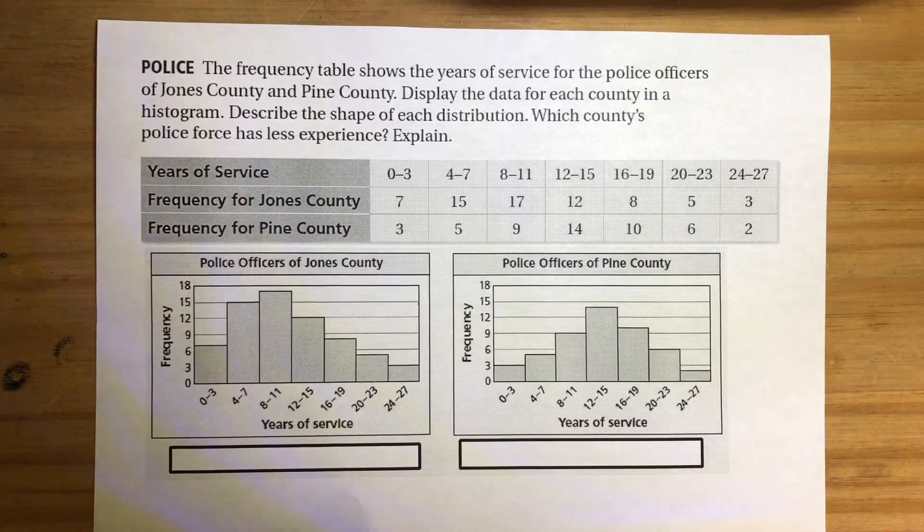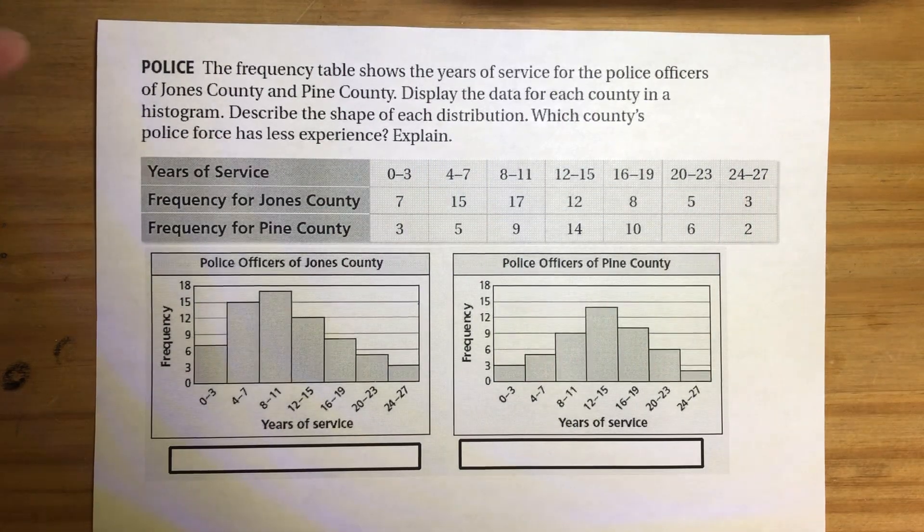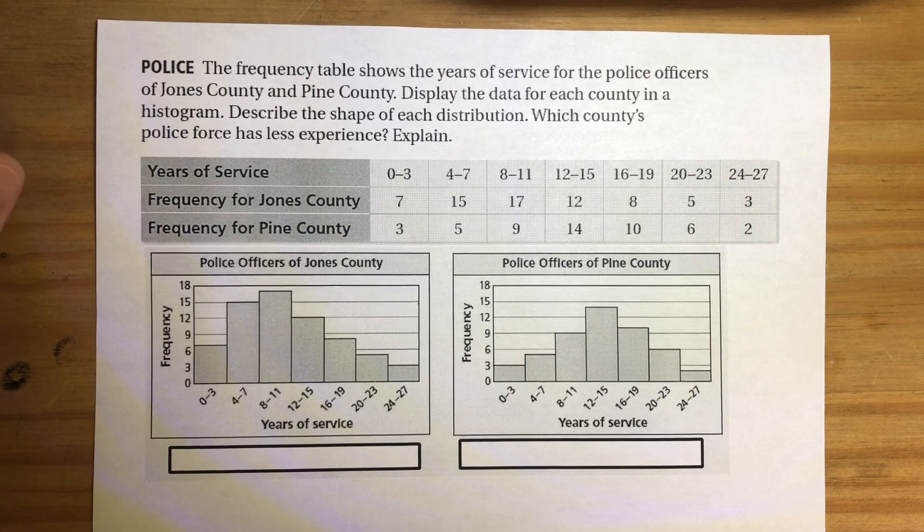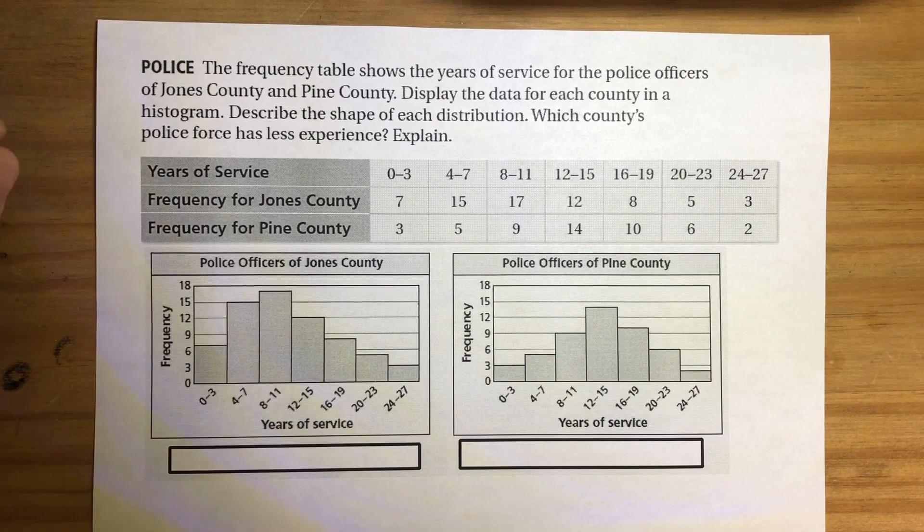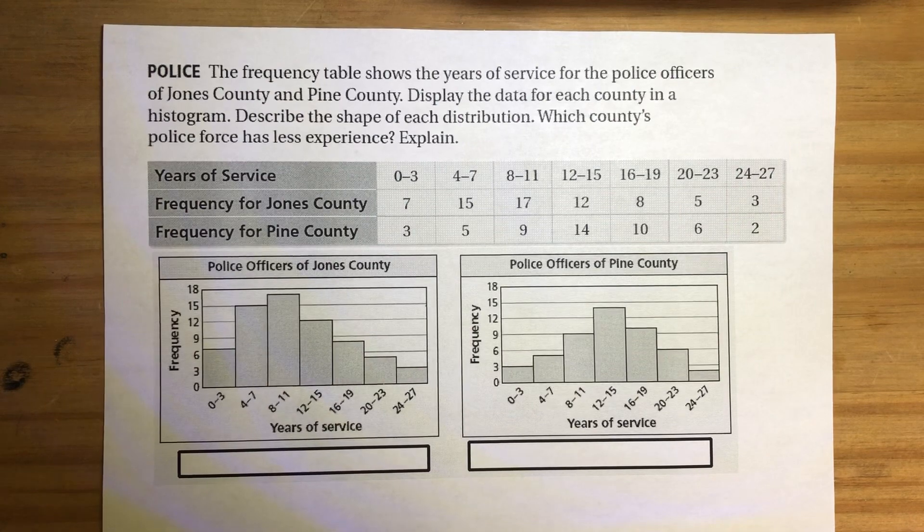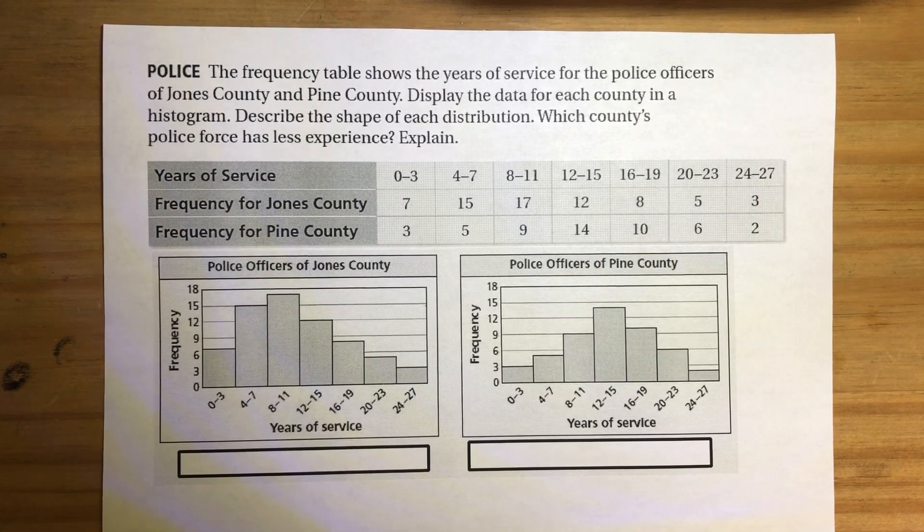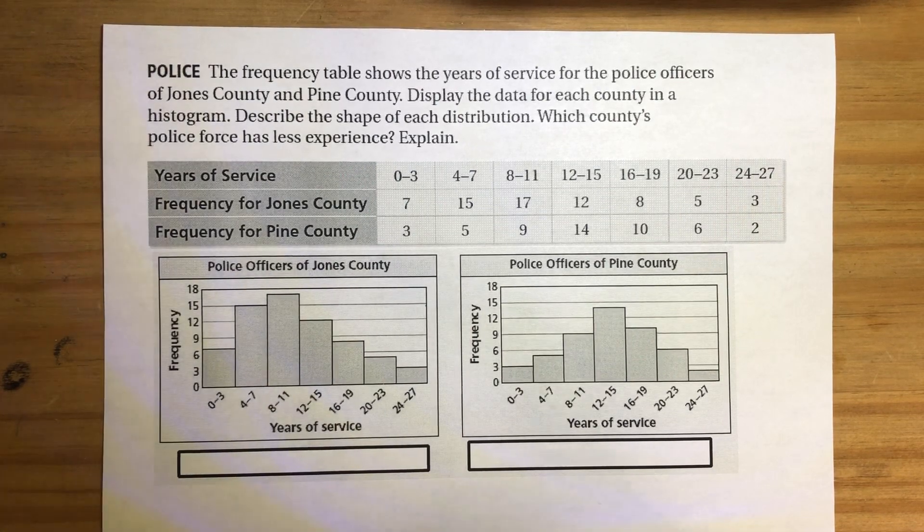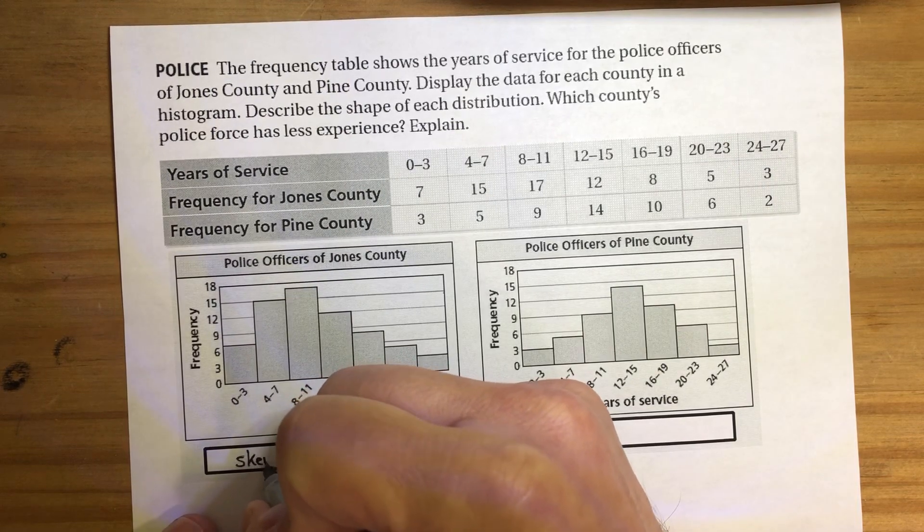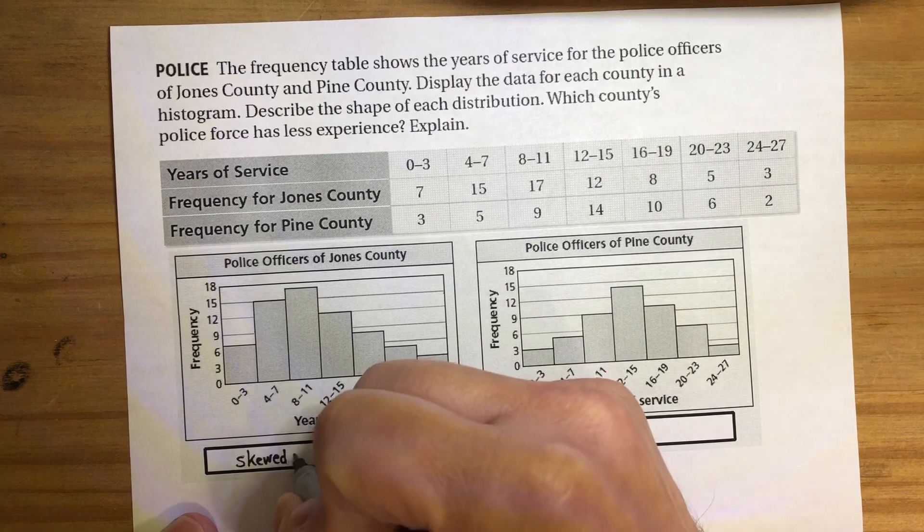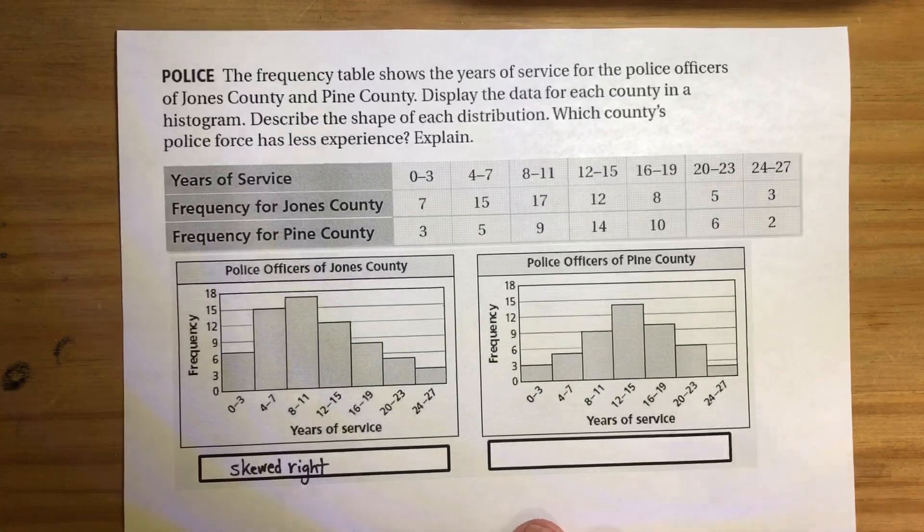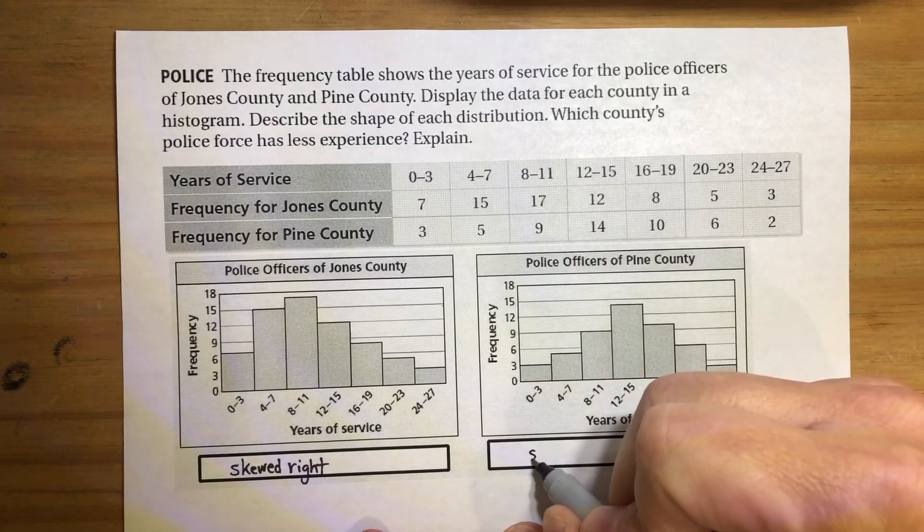So here we go, the last question for this video. The frequency table shows the years of service for the police officers of Jones County and Pine County. Display the data for each county in a histogram. You can see I've got both histograms there. And it wants to know the shape of each distribution. So you can see that this is skewed right. It's because most of the data is to the left. And this one is, I would say, pretty symmetric.